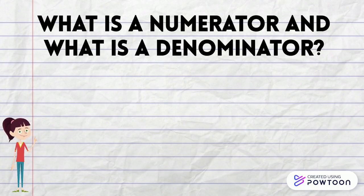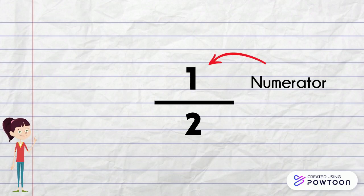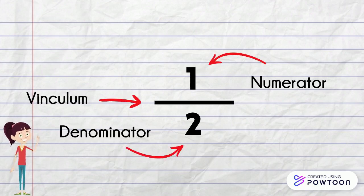What is a numerator and what is a denominator? The numerator is known as the top half of the fraction or the number above the line. This line is also known as the vinculum. The denominator is known as the bottom half of the fraction or the number below the vinculum.